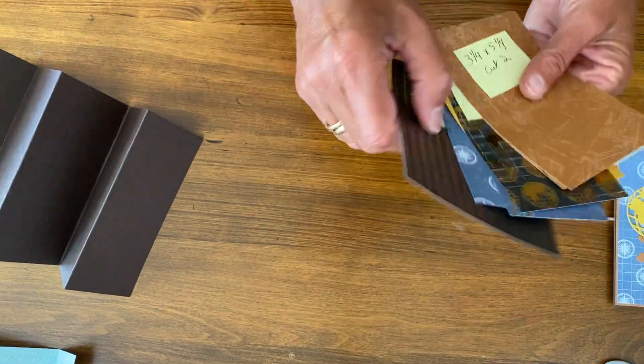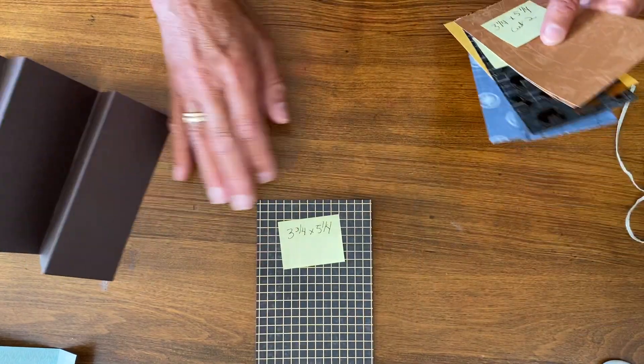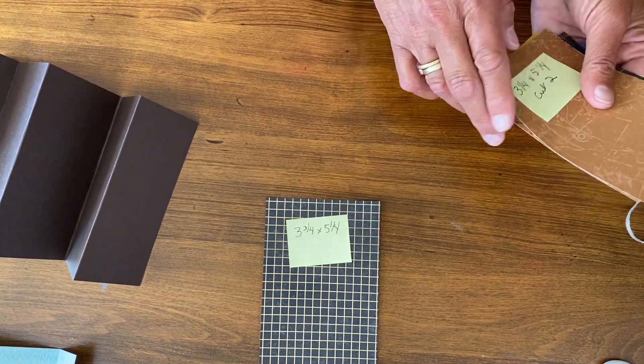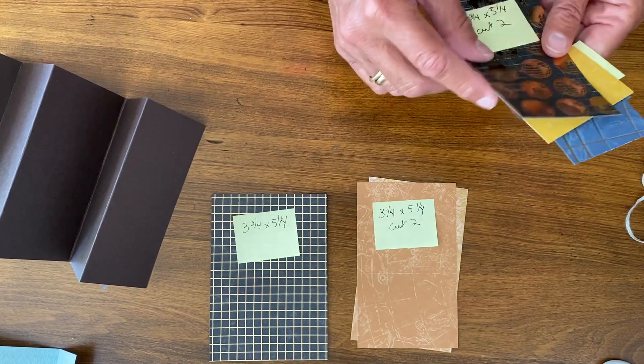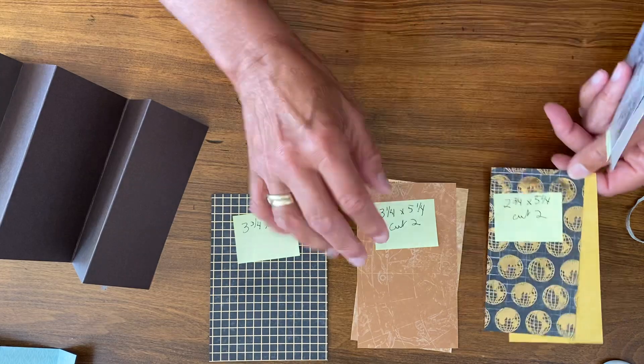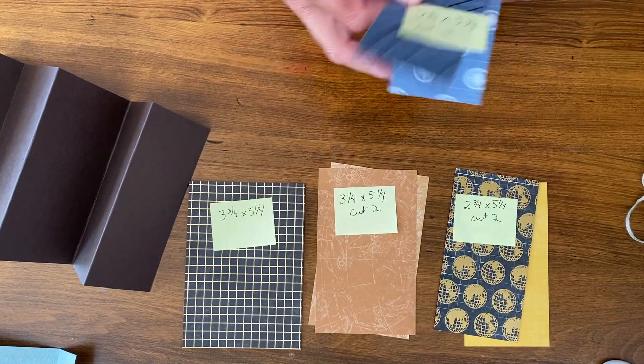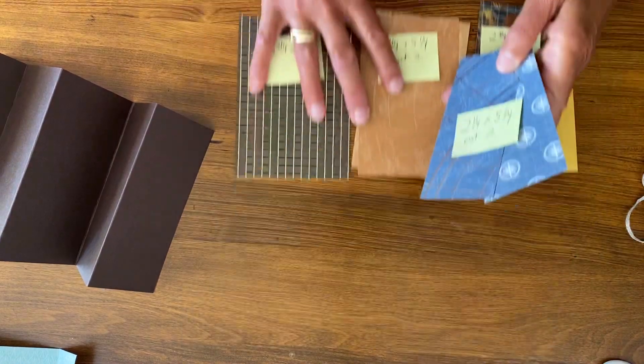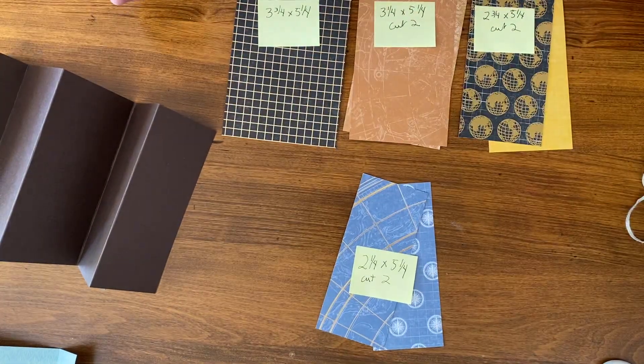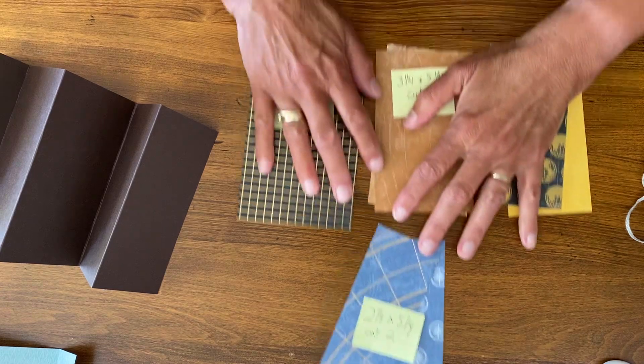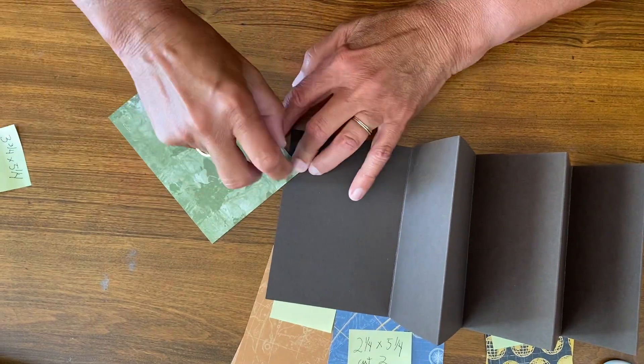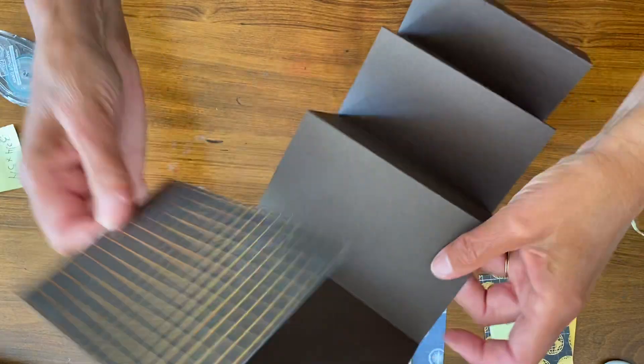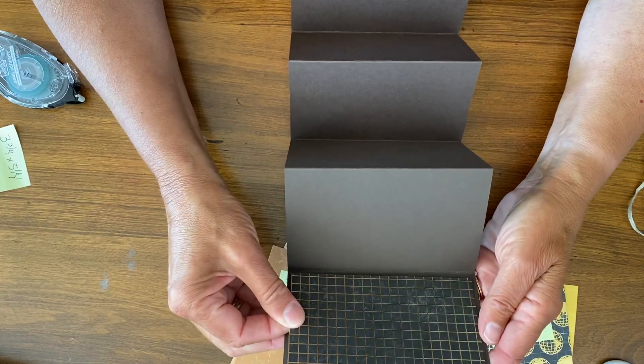I'm going to cut one that's three and three-fourths by five and a quarter, two that are three and a quarter by five and a quarter, two that are two and three quarters by five and a quarter, and two that are two and a quarter by five and a quarter. And then I'm going to just start putting these on. I'm going to start working from the back, backside in.